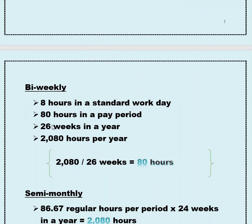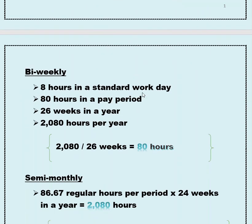Moving on to bi-weekly. Again, there are still eight hours in the standard workday, 80 hours in a pay period instead of 40 as we saw earlier, and there are 26 pay periods in a year, still totaling 2,080 annual hours. 2,080 is the standard per year, which you'll see throughout this entire video. To get your 80 hours, you divide 2,080 by 26 weeks, and that gives you your 80 hours.